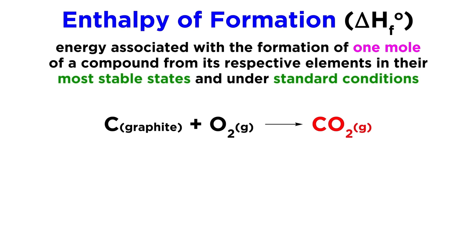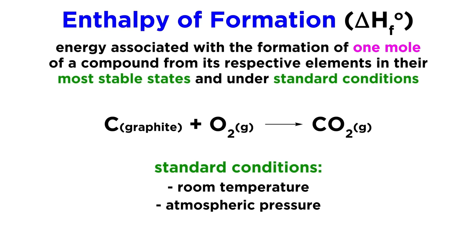For example, carbon dioxide is made of carbon and oxygen. In order to form one mole of carbon dioxide, we would need one mole of carbon atoms and one mole of oxygen molecules. The carbon is assumed to be graphite rather than coal or diamond, and the oxygen is O2 rather than O3, as these are the most stable states of these elements, and we assume standard conditions, which means room temperature and atmospheric pressure.